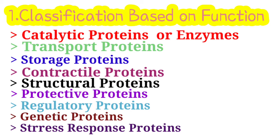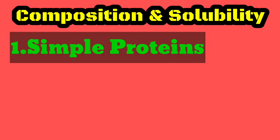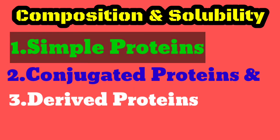Heat shock proteins act as chaperones. Chaperones are proteins that assist in the folding of other proteins. Coming to the second classification based on composition and solubility, proteins are classified into three types: simple proteins, conjugated proteins, and derived proteins.